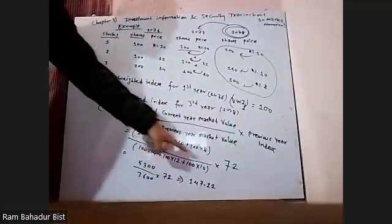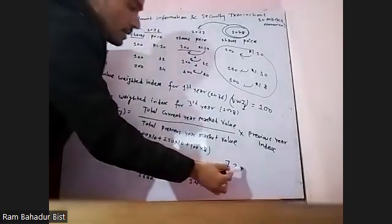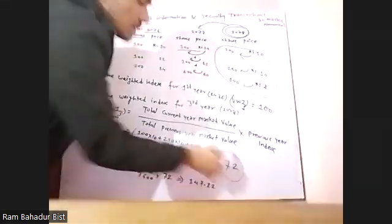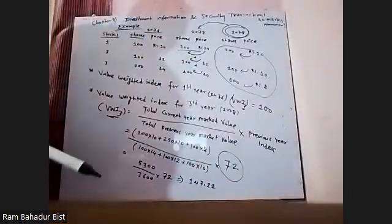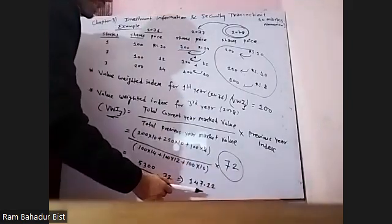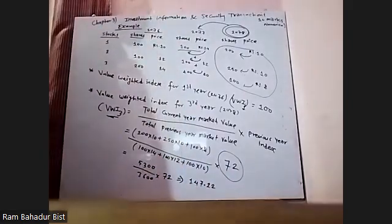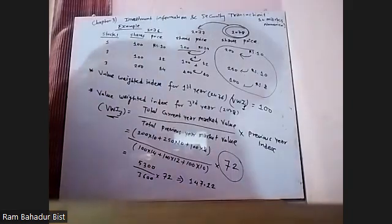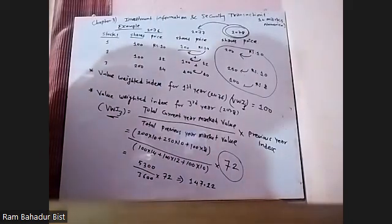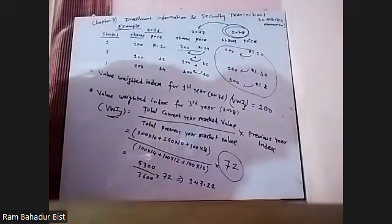Into previous year index. Third year, second year — we will multiply the answer. Fourth year, then we will multiply the answer. Do you understand?